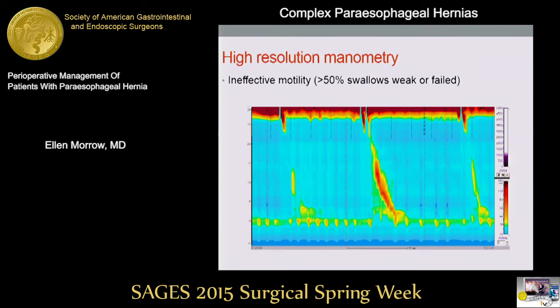This is an image of a high-resolution manometry study. Centrally here you can see what's basically a normal swallow, and then on either side you have two hypotensive swallows. It's not my task to discuss fundoplication choice, but this can be a helpful part of the preoperative workup because it may affect your operative planning.